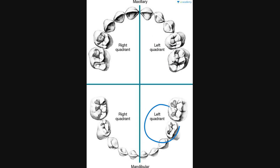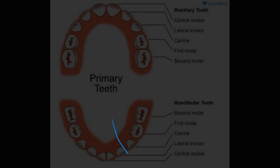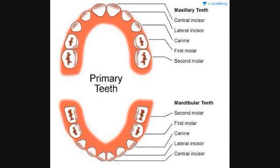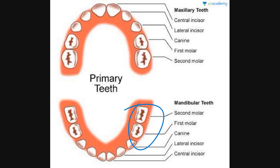In this diagram you can easily differentiate the quadrants and the arches — the upper arch (maxillary arch) and the lower arch (mandibular arch). The upper is divided into two: the right quadrant and the left quadrant; and similarly the lower has the right and left quadrants. In the upper maxilla you can see five teeth on each side, and the same in the lower. The five teeth are: central incisor, lateral incisor, canine, first molar, and second molar. This is the deciduous dentition.